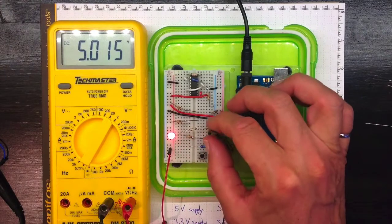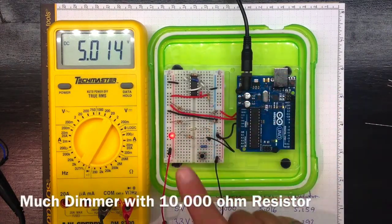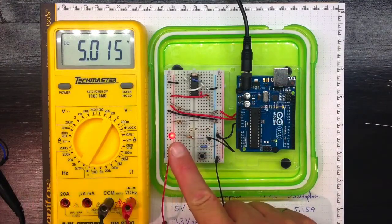So if we connect the LED through that one, less current will flow. And sure enough, the LED lights, but it lights really dimly.